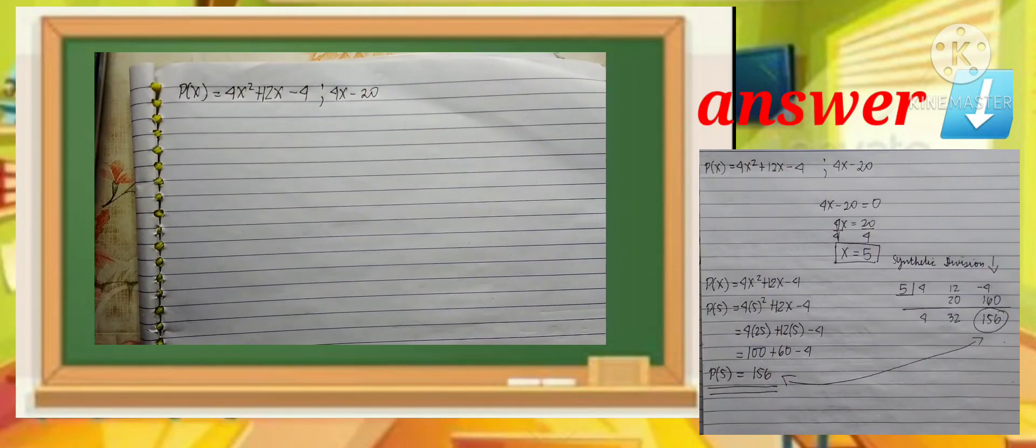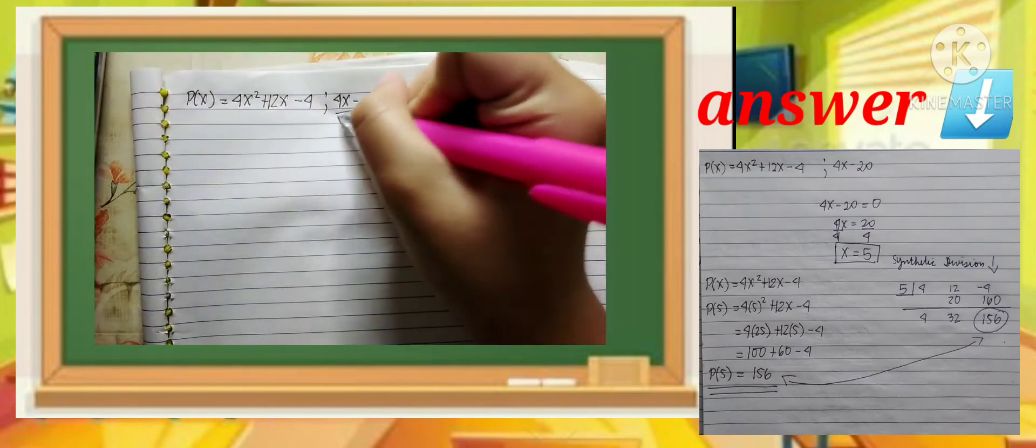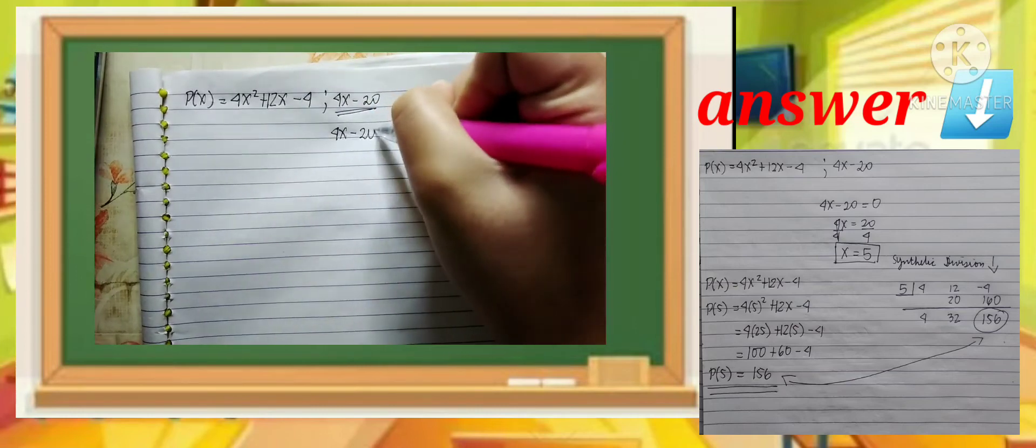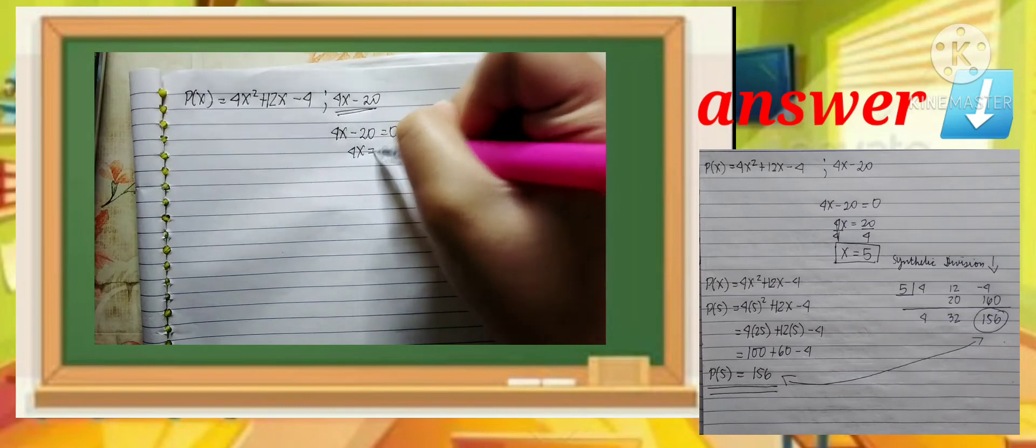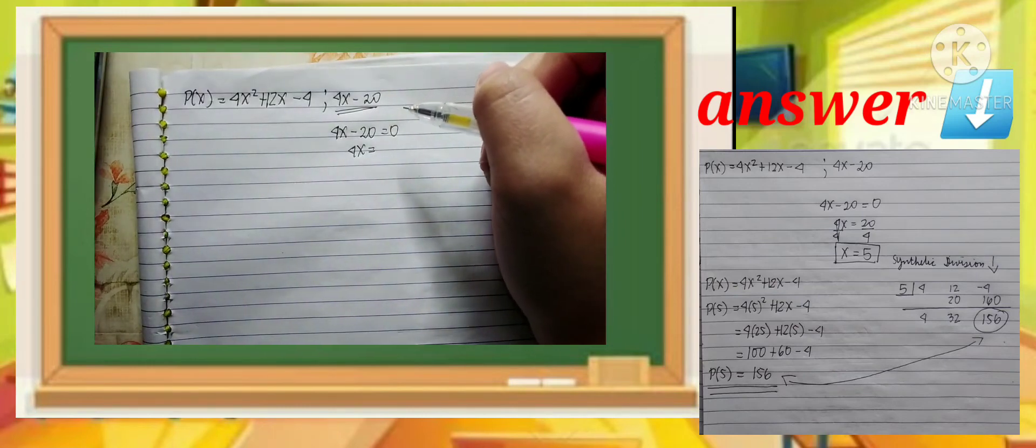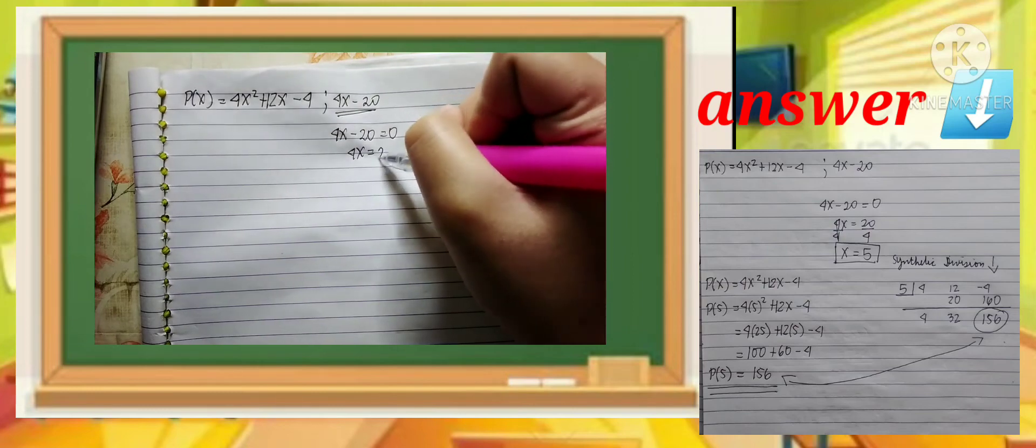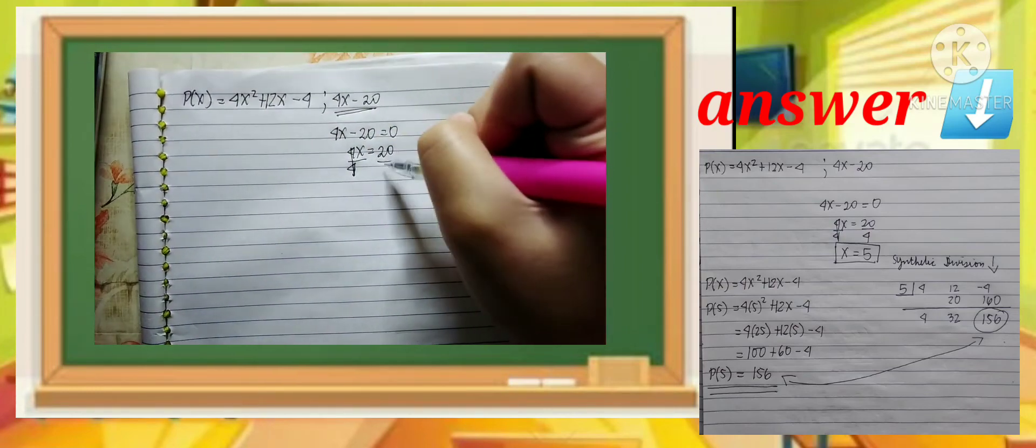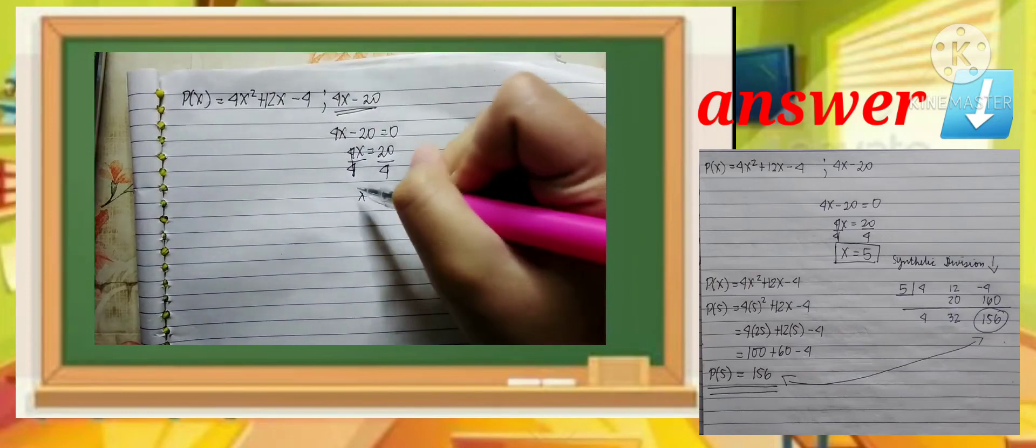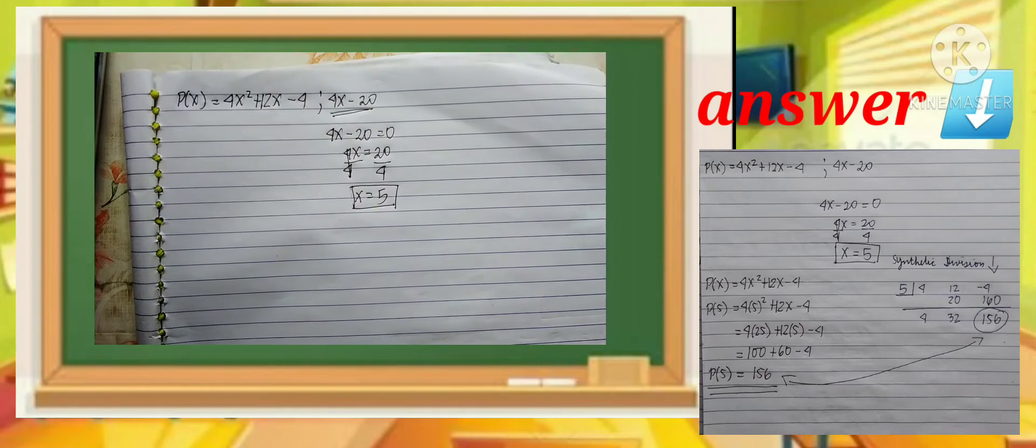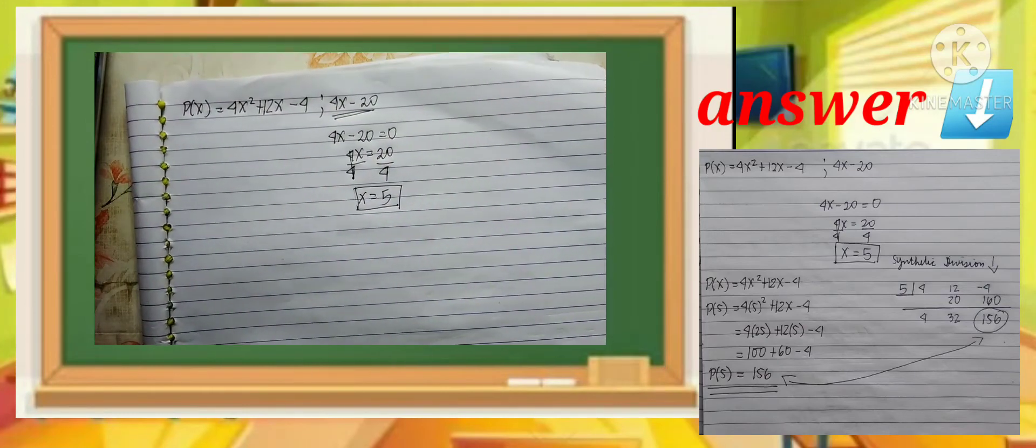This is an example of remainder theorem. The given is p(x) = 4x² + 12x - 4, and the divisor is 4x - 20. First, we need to find x. So 4x - 20 equals 0. 4x equals, transpose negative 20 so it becomes positive. Then cancel, divide by 4 and cancel. x equals 5. So our x is 5. All the x values here will be replaced by 5.